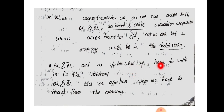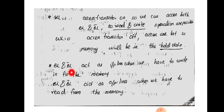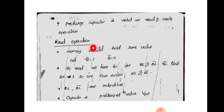BL and BL-bar act as input lines during write operations and as output lines during read operations. For reading something from memory, we need BL and BL-bar as output lines, and for writing to memory we also use BL and BL-bar as input lines. There is also a pre-charge capacitor which is used in both read and write operations.